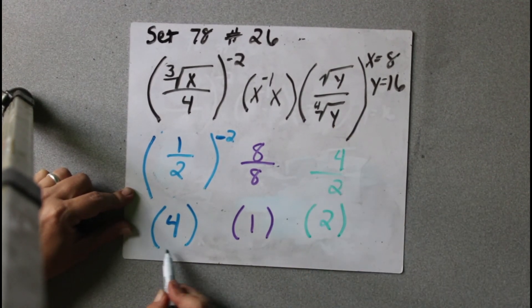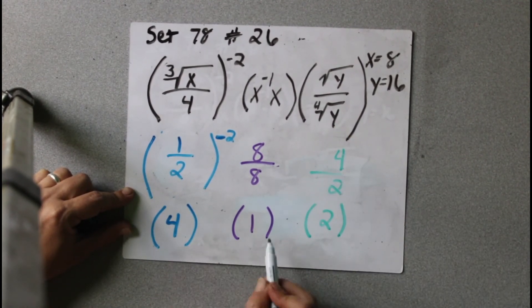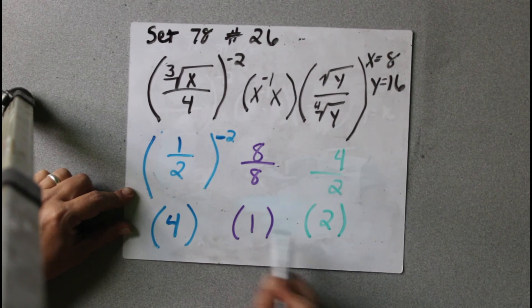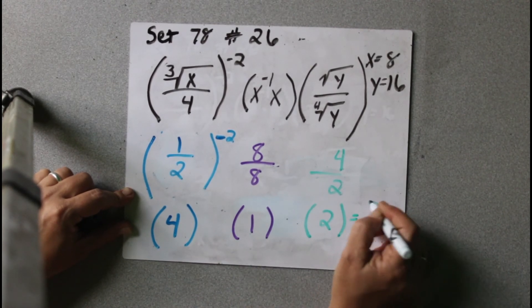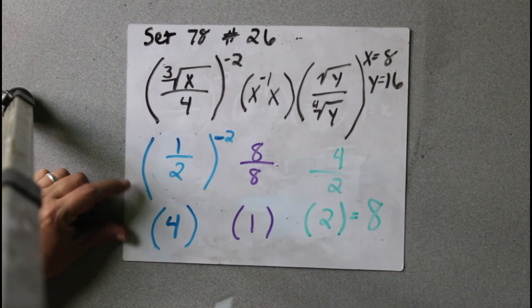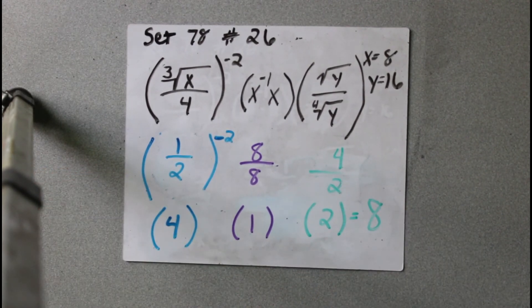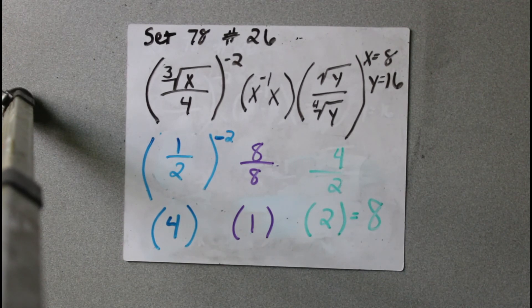Now we just have to multiply these three together. 4 times 1 is 4, 4 times 2 is 8. So the answer to number 26 on set 78 is 8.